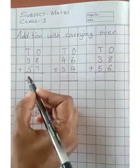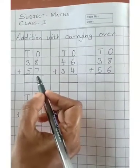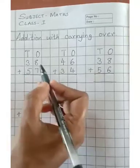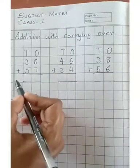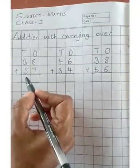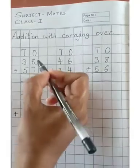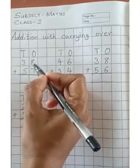38 plus 57. 3 tens and 8 ones, plus 5 tens and 7 ones. So we will count from the ones place.